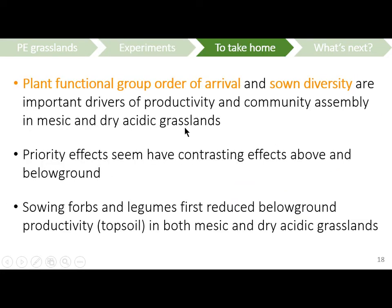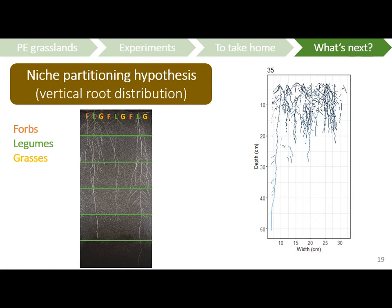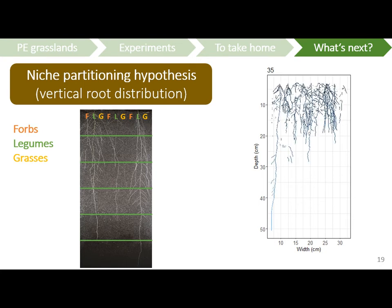Some take-home messages: both plant functional group order of arrival and species diversity are very important drivers of productivity and community assembly in both dry acid and mesic grasslands. Priority effects seem to have very contrasting effects above and below ground, and this is something we would like to investigate further. We mainly showed that sowing forbs or legumes first can reduce below-ground productivity, at least in the top soil region — though soil cores only provide a snapshot of root productivity at a given time point and location.